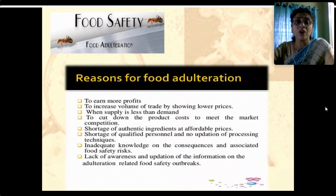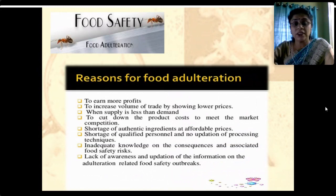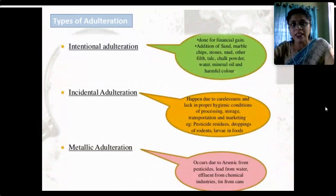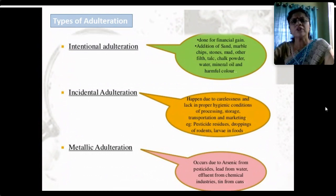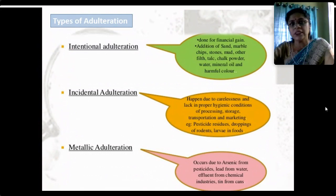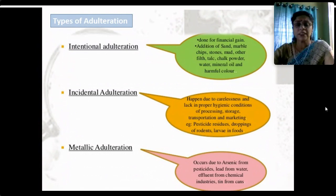Lack of awareness and updation of information about adulteration and food safety is also a factor. Some adulteration is done intentionally, some accidentally, some incidentally — but the ultimate outcome of all this is health hazard or health risk. There are three main types of adulteration: intentional adulteration for financial gain — such as addition of sand, marble stones, chalk powder, water, mineral oil, harmful colors; incidental adulteration due to carelessness or lack of proper hygienic conditions — pesticide residues, bird and rodent droppings, larvae; and metallic contamination from arsenic, lead, or tin from cans.